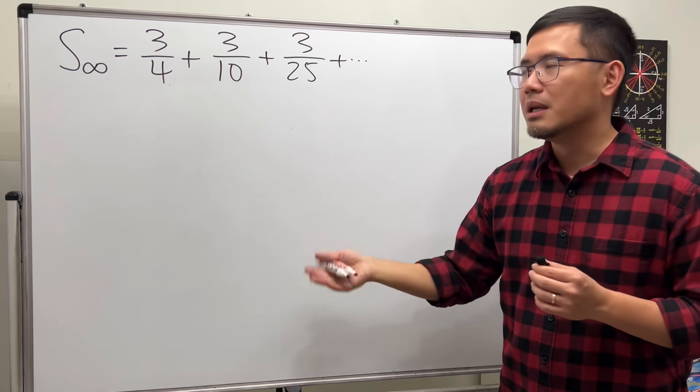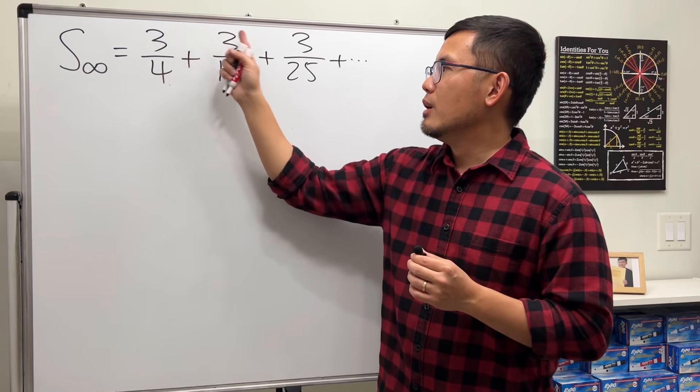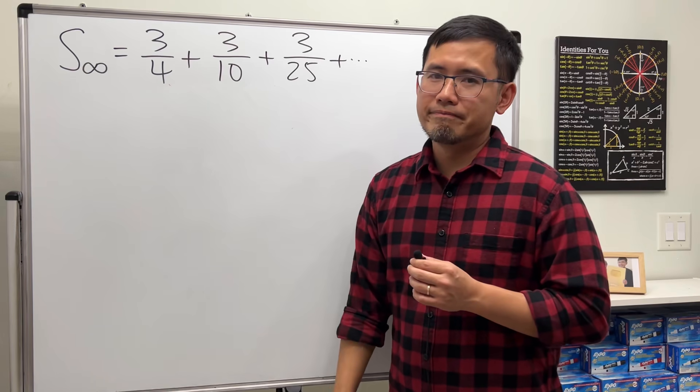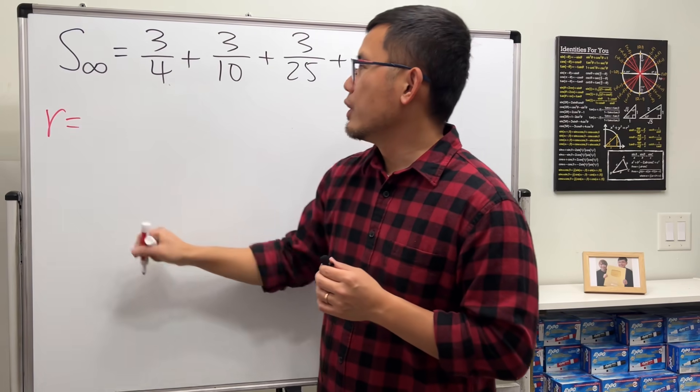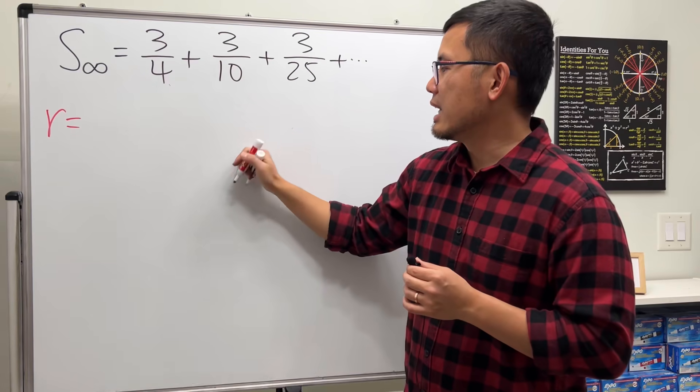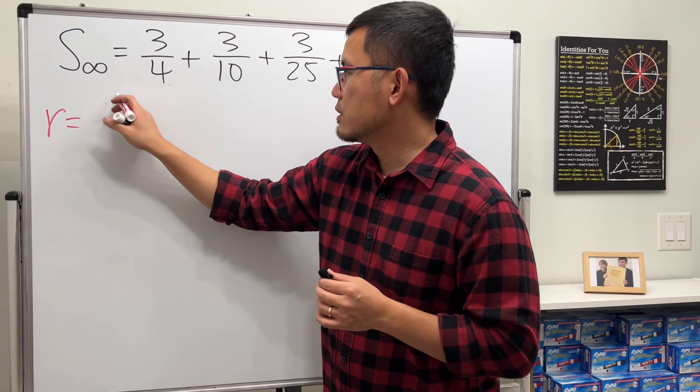Anyway, let's go ahead and find the common ratio first. To do so, we can pick this term and divide it by that. So let's go ahead and just do 3 over 10, that's already a fraction, divided by 3 over 4.